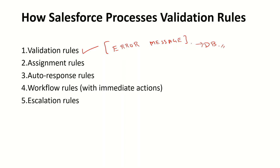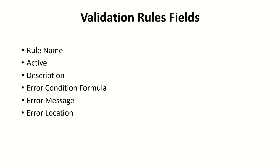Error messages should be user-friendly so users can read them and make the changes needed to save the record without any issue. If you have complex error messages with technical or tech terms, users will go to the system administrator and the team will be stuck trying to figure out what caused the error. It's always best practice to have user-friendly error messages that are easy to read, easy to understand, and easy to act on.